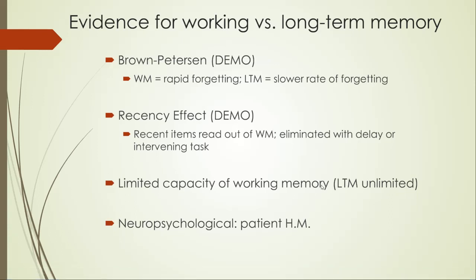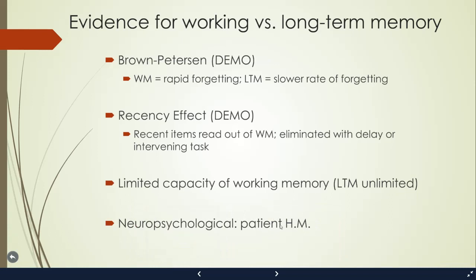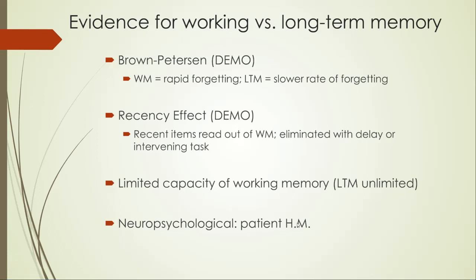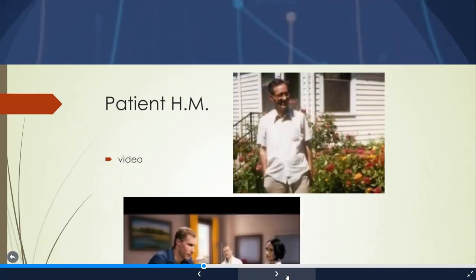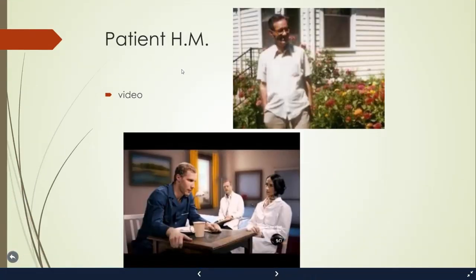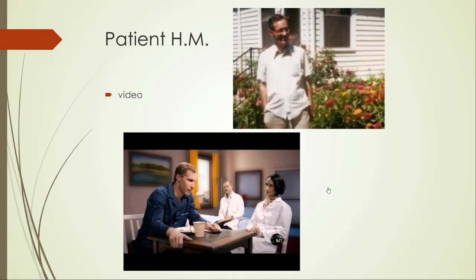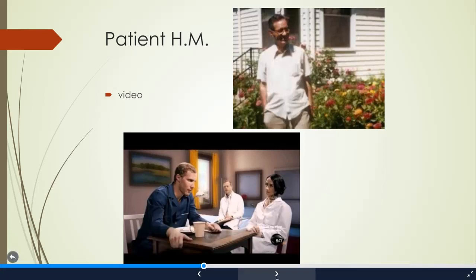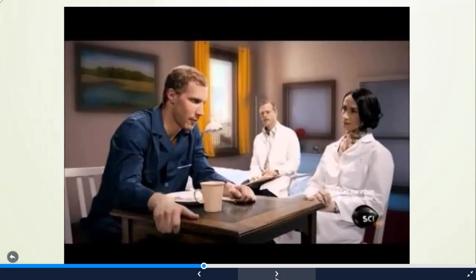The last piece of evidence is neuropsychological evidence that comes from a patient known to us as HM. He subsequently died and his name was released — his name was Henry Molaison — and he provided some really important, clear evidence that there's a difference between working memory and long-term memory. This is the point where I usually have you watch a video. So pause this recording, watch the amnesic video that describes his case, then resume this video and we'll summarize what happened with his case.